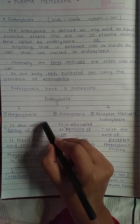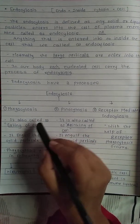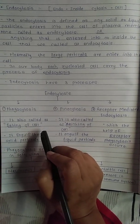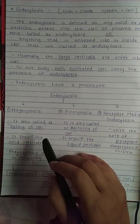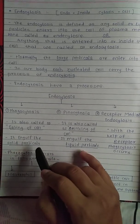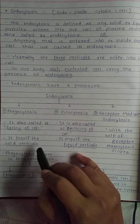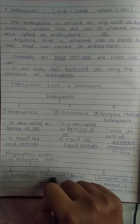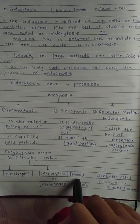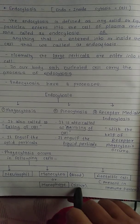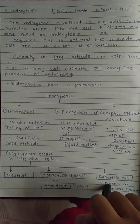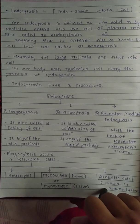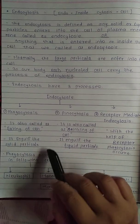Phagocytosis is also called the eating of the cell — it engulfs solid particles. Phagocytosis occurs in neutrophil cells, monocytes present in blood, macrophages present in tissue, and dendritic cells. These dendritic cells are present in the immune system.